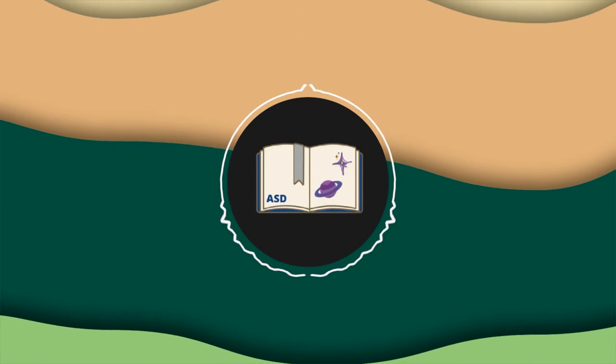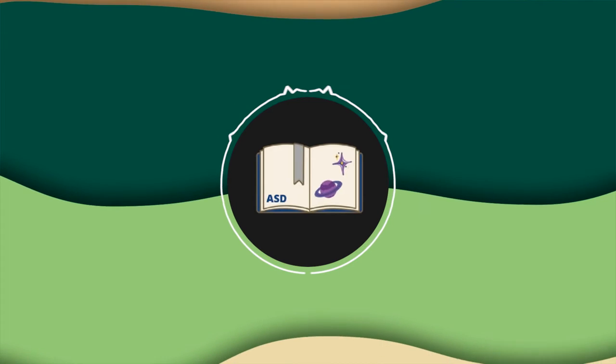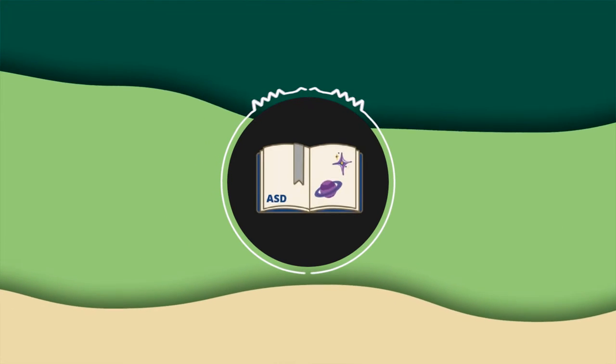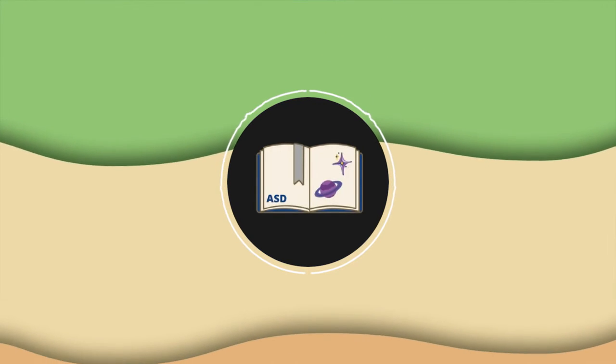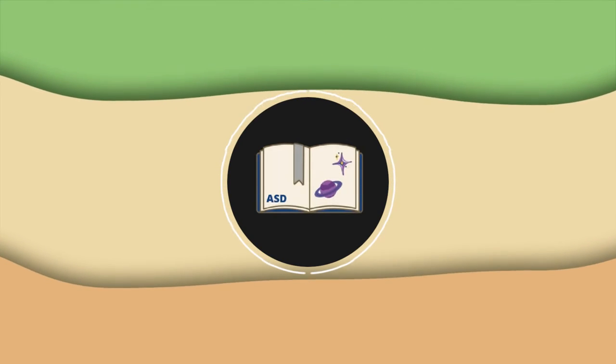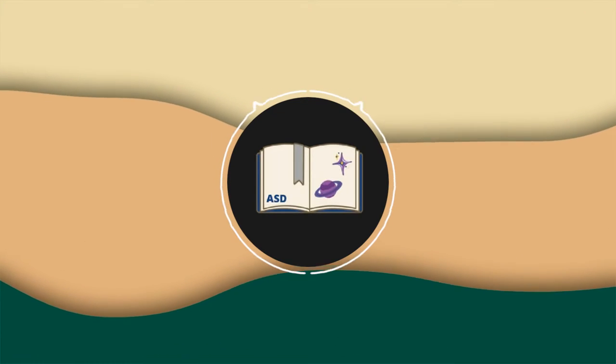These microbes play key roles in nutrient cycling, biodegradation, climate change, food spoilage, the cause and control of disease, and biotechnology. Thanks to their versatility, microbes can be put to work in many ways, making life-saving drugs, the manufacture of biofuels, cleaning up pollution, and producing food and drink.